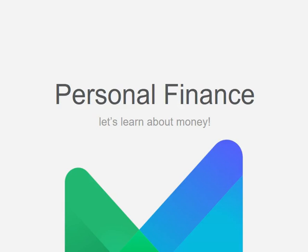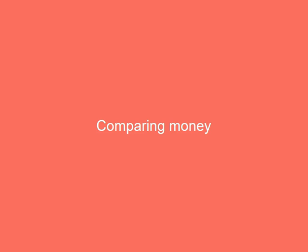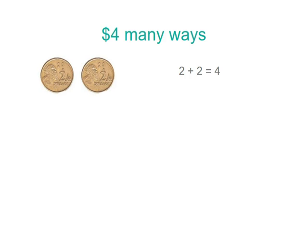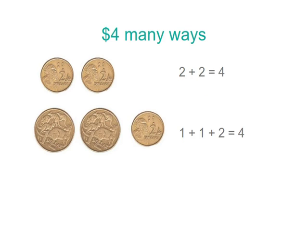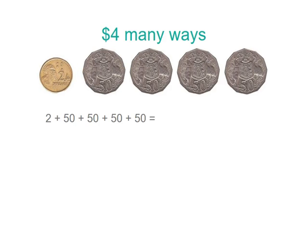In our third video we're going to look at comparing coins. So let's think about four dollars. You could make four dollars from two two-dollar coins, because two plus two equals four, or four one-dollar coins, because four times one equals four, or two one-dollar coins and a two-dollar coin.